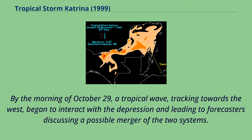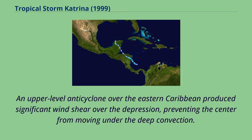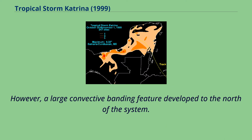By the morning of October 29, a tropical wave tracking towards the west began to interact with the depression, leading to forecasters discussing a possible merger of the two systems. An upper-level anticyclone over the eastern Caribbean produced significant wind shear over the depression, preventing the center from moving under the deep convection. However, a large convective banding feature developed to the north of the system.